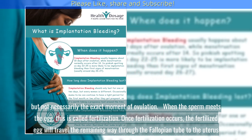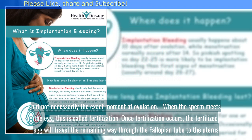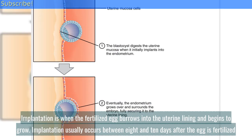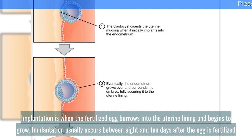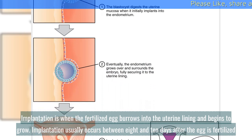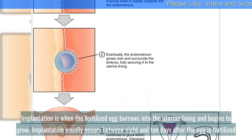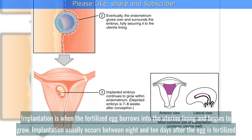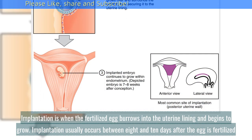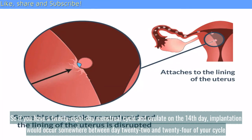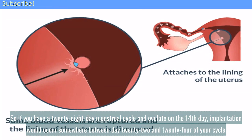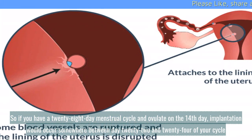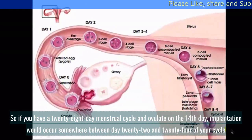Once fertilization occurs, the fertilized egg will travel the remaining way through the fallopian tube to the uterus. Implantation is when the fertilized egg burrows into the uterine lining and begins to grow. Implantation usually occurs between 8 and 10 days after the egg is fertilized. So if you have a 28-day menstrual cycle and ovulate on the 14th day, implantation would occur somewhere between day 22 and 24 of your cycle.